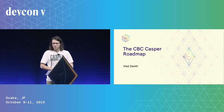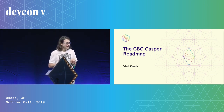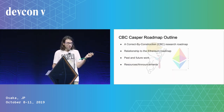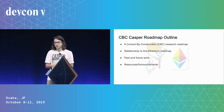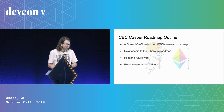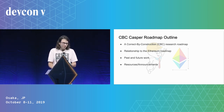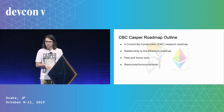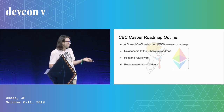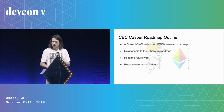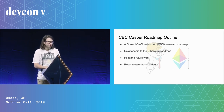We're going to talk today about the CBC-Casper roadmap, and it's going to be a little bit less action-packed than the normal DevCon talk. Here's my outline: I'm going to talk about the roadmap as a research roadmap, as opposed to an implementation roadmap or a roadmap for developers. I'll cover the relationship between my roadmap and the Ethereum roadmaps, past and future work, and then give some resources and announcements.